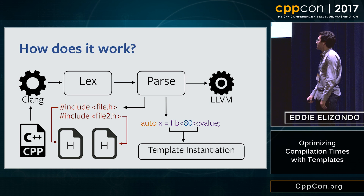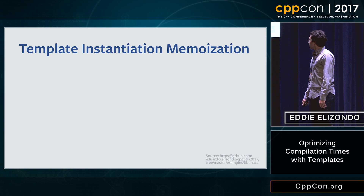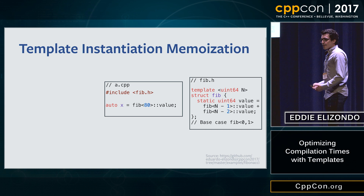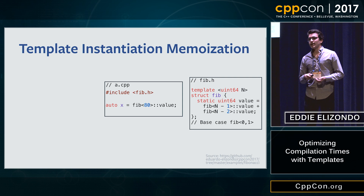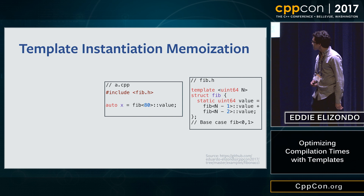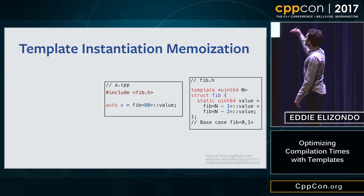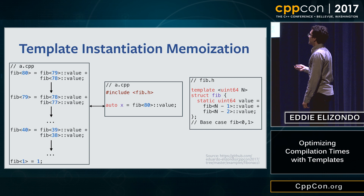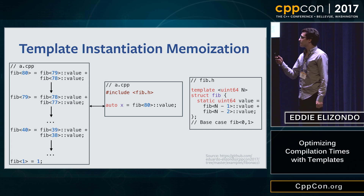Let's dive deeper into the template instantiation phase using Fibonacci as an example. That's a simple implementation — I'm just missing the base cases, but you get the idea. In a .cpp file that includes that header, we have Fibonacci<80> assigned to variable x. The parser comes in, includes the header, finds Fibonacci<80>, and turns to the template instantiation phase. It starts instantiating all the templates — Fibonacci calls itself recursively until it reaches the base case, then returns the value to variable x.